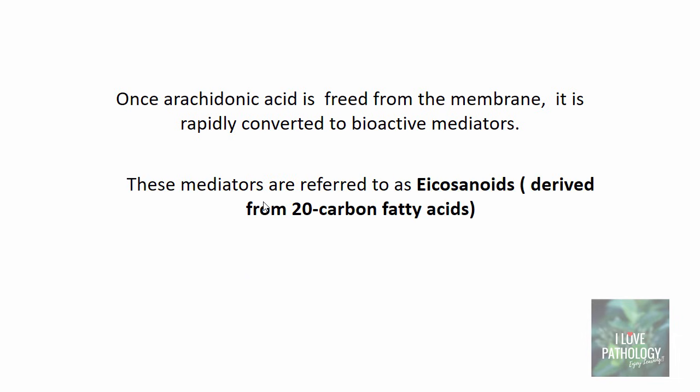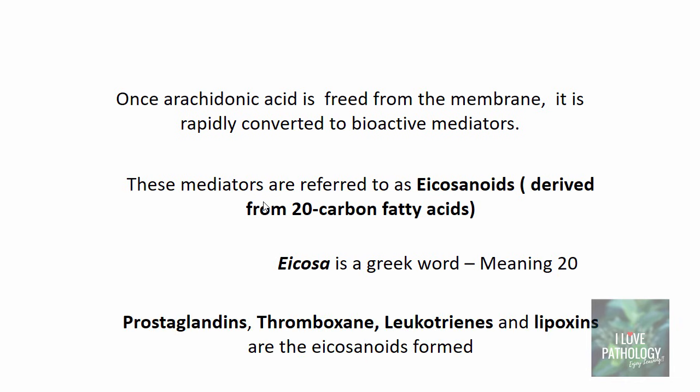These mediators are referred to as eicosanoids. Eicosanoids means they are derived from 20-carbon fatty acids — 'icosa' is a Greek word meaning 20. The prostaglandins, thromboxane, leukotrienes and lipoxins are the eicosanoids which are formed from arachidonic acid.